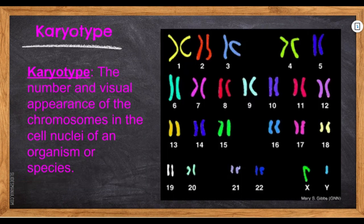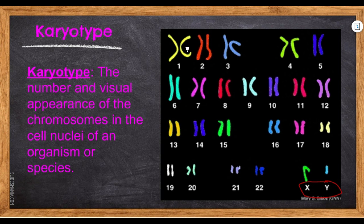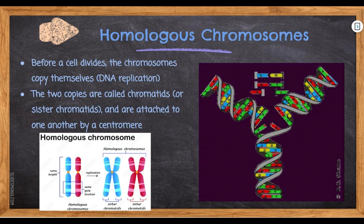Here we have all of these homologous chromosomes. Remember, homologous chromosomes have the same kind of gene, but one comes from mom and one comes from dad. The only difference is in the sex chromosomes: if you have X and Y that means it is a male; if it were XX that would be female. The karyotype is just the number and visual appearance of the chromosomes in the cell nuclei of an organism. These are all the homologous chromosomes lined up from 1 to 23 — we have 46 chromosomes total, half from mother, half from father, broken into 23 pairs. The 23rd pair is the sex chromosomes: XY for male, XX for female.